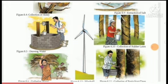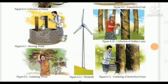In this picture, man is drawing water from the well. In the next picture, a lady is collecting rubber from the trees. Here, one lady is gathering wood and a man is gathering raisin from the trees. The next question is: what things will they obtain through these activities? Through these activities, man can get different natural resources such as soil, water, rubber, wood, etc.